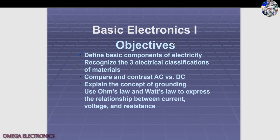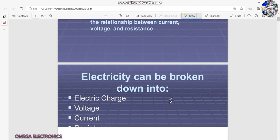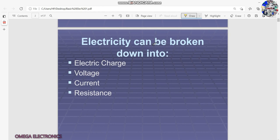Hello everyone. Today we will cover basic electronics, Part 1. The objectives are: first, to define the basic components of electricity; second, to recognize the three electrical classifications of materials; third, to compare and contrast AC and DC currents; fourth, to explain the concept of grounding; and fifth, to use Ohm's Law and Watt's Law to express the relationship between current, voltage, and resistance.